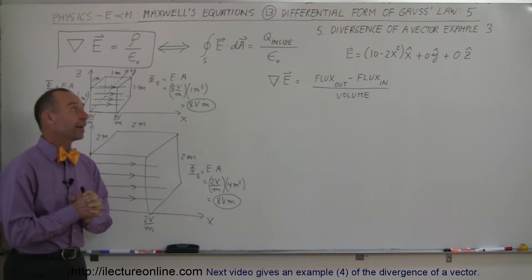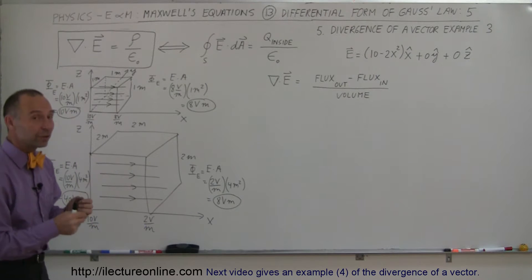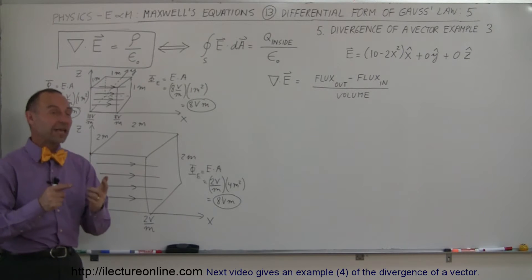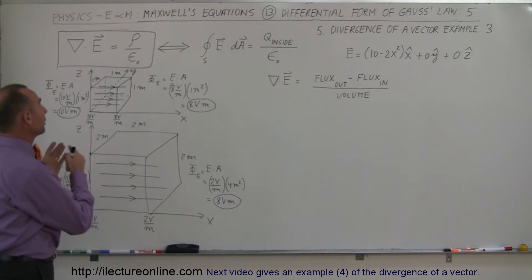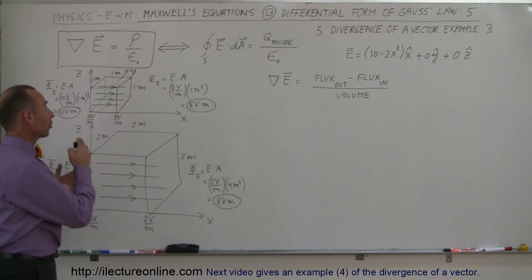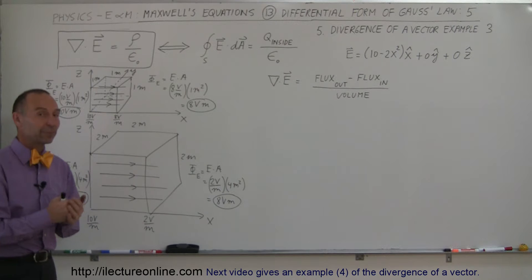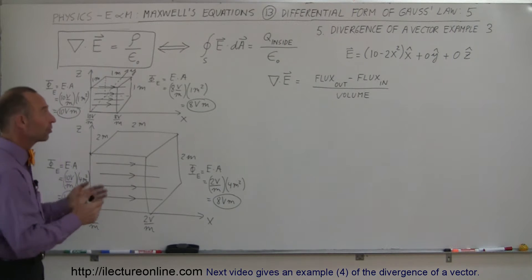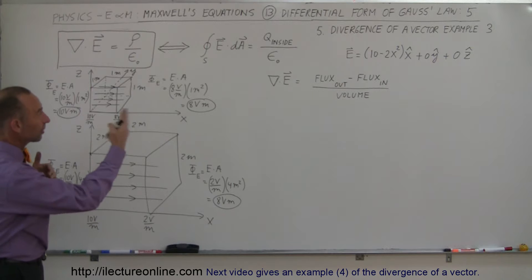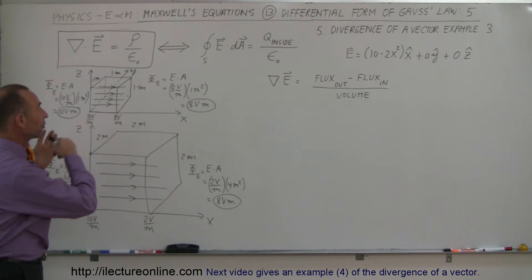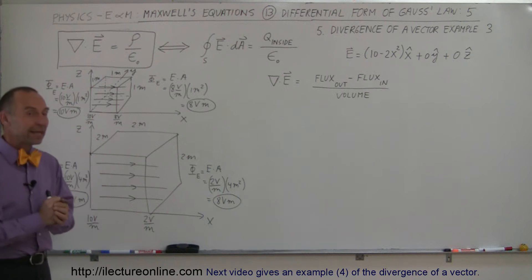Welcome to ElectronLine. We're continuing with our quest to understand the divergent electric field being equal to the charge density divided by epsilon sub-naught, which is the equation that represents Gauss' law in differential form.